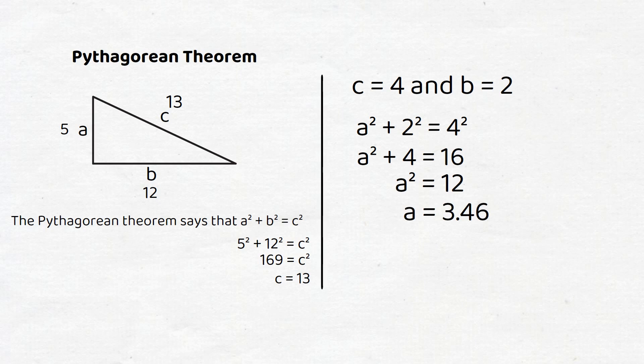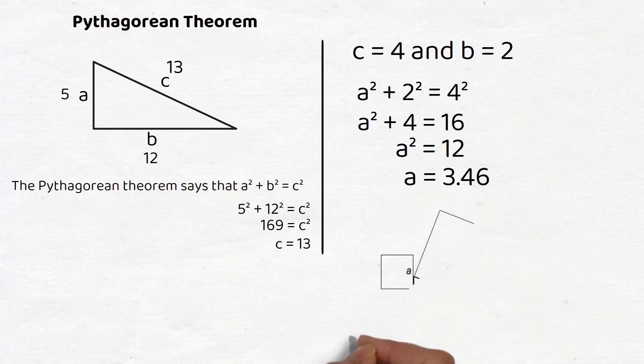The implication of this theorem is that if we construct squares on each side of the triangle, the two smaller squares will add up to the larger square in area.